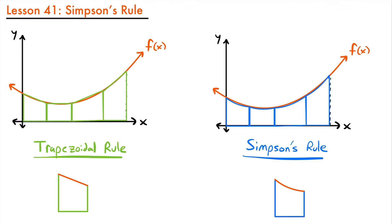While there is a proof or a derivation for the formula for Simpson's rule, it is a bit beyond the scope of what you need to know for calculus, and it's not necessary to see in order to use it. So I'm just going to give you the formula for Simpson's rule in this case. Typically, you will look at the proof or the derivation for Simpson's rule in a numerical analysis class, but for Calc 1 purposes, you just need to know the formula.